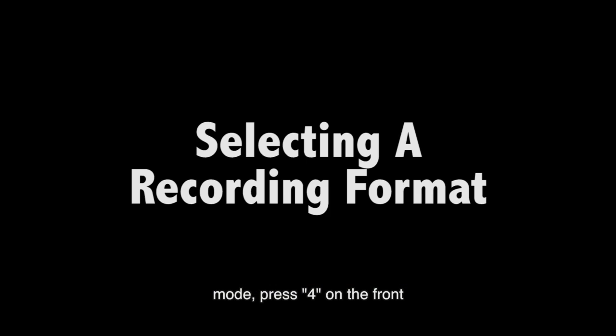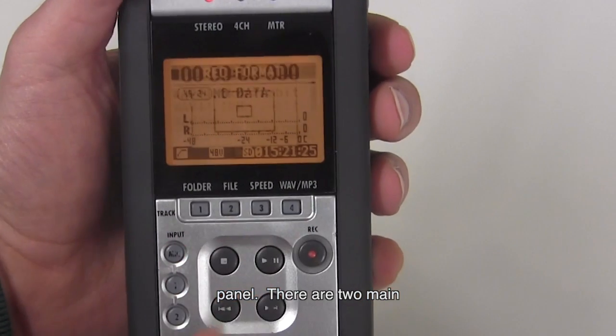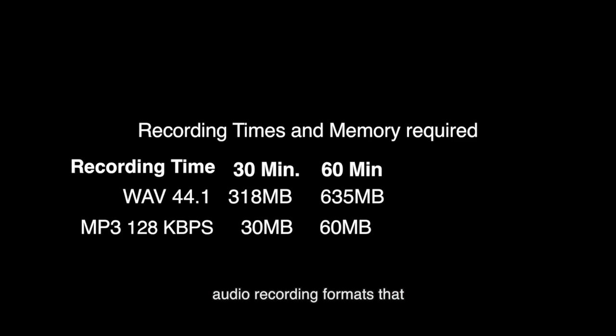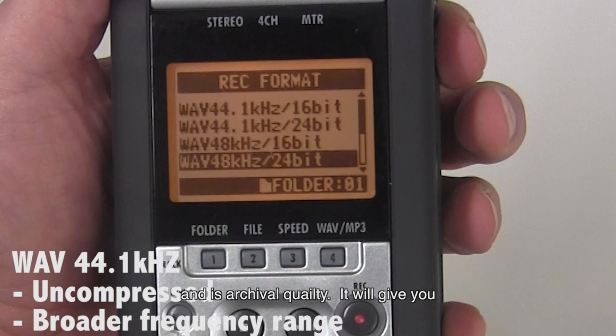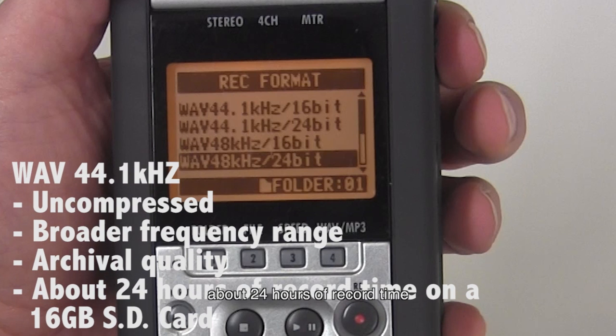To select a recording mode, press 4 on the front panel. There are two main audio recording formats that we use on the H4N. Wave 44.1 kHz is uncompressed, has a broader frequency range, and is archival quality. It will give you about 24 hours of record time on a 16 GB SD card.